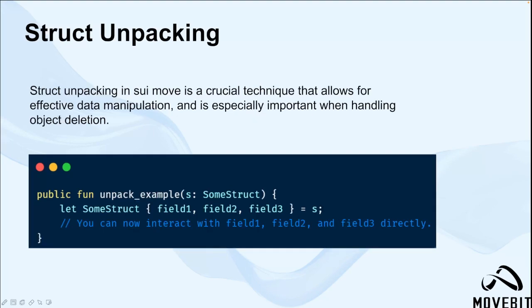For the structure unpacking, it refers to the process of extracting the individual values from a structure and assigning them to separate variables. This allows the programmer to work with the structure's individual components directly. In Sui Move, the concept of structure unpacking is essential due to the language's strict rules regarding how data structures are handled.